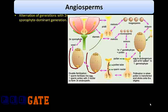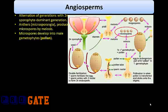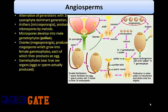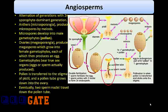Angiosperms have alternation of generations, with the 2n sporophyte being the dominant generation. The anthers, which are equivalent to microsporangia, produce microspores by meiosis, and the microspores develop into the male gametophyte — that is, pollen. The ovaries, which are equivalent to megasporangia, produce megaspores which grow into female gametophytes, each of which produces an egg. By some means — wind or animal pollinator — the pollen is transferred to the stigma of the pistil, and a pollen tube grows down into the ovary.